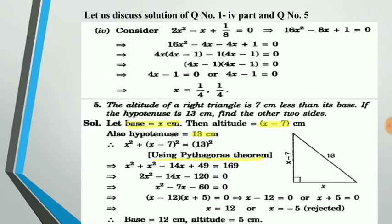Now factorizing x² - 7x - 60 = 0: the product is 60 and the sum is minus 7. We write the factors of 60 as 12 and 5, so minus 12 plus 5 gives minus 7. Factorizing gives x = -5 or x = 12. Since x is the base, it cannot be negative, so x = 12. The altitude is therefore x - 7 = 5. The three sides of the triangle are 5, 12, and 13.